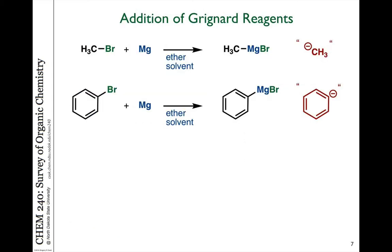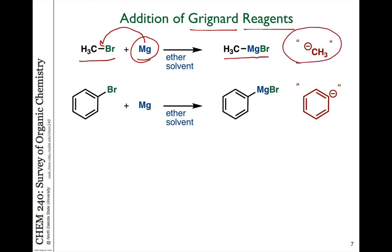I want to talk about a class of reagents which we refer to as the Grignard reagents, named after the chemist who discovered these molecules, Victor Grignard. What he did was take any kind of organic halogen compound such as bromomethane and react those with magnesium metal. Magnesium will donate its electrons to insert in between the carbon-bromine bond to form what we refer to as an organometallic reagent. There's a carbon-metal bond, or you can think about this as a carbanion — CH3 minus and MgBr plus — with magnesium in the plus two oxidation state.